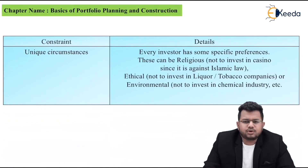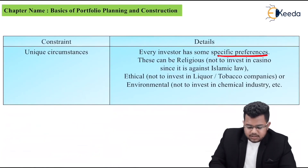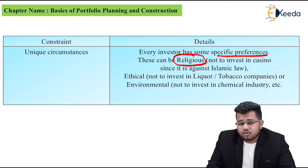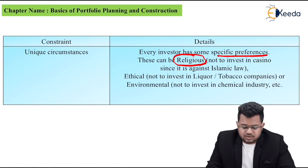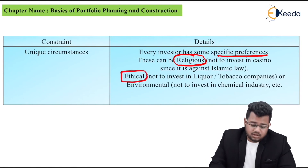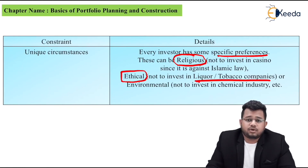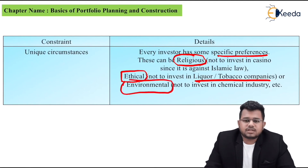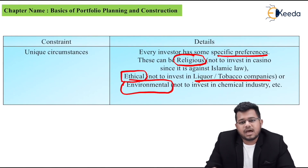The last constraint is any unique circumstances. Every investor has some specific preferences. These can be religious — for example, not investing in casinos since it is against Islamic law. They can be ethical — not investing in liquor or tobacco companies if the client strongly holds such values and won't invest in such industries. They can also be environmental — not investing in chemical industries that cause heavy pollution. These are your client's unique constraints, and you must keep them in mind before investing their money.